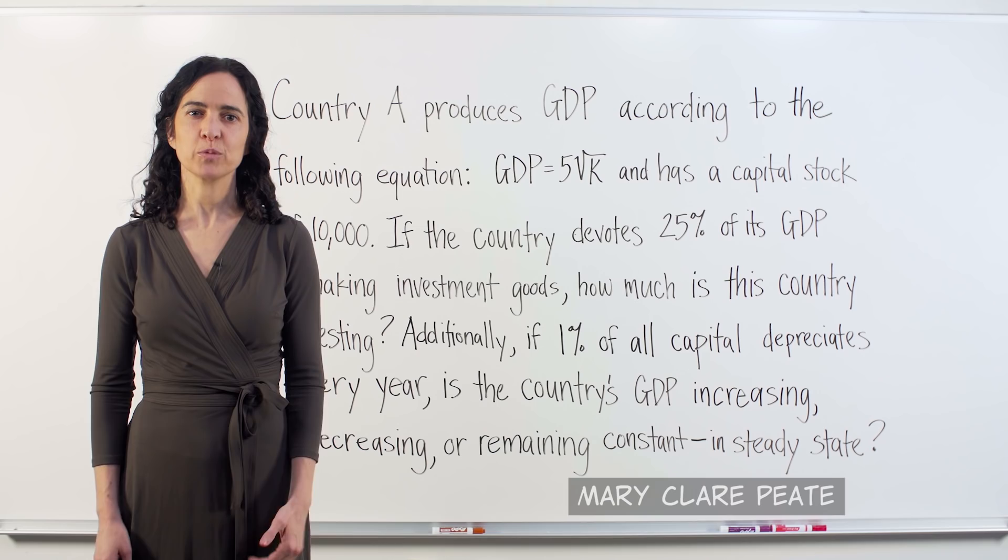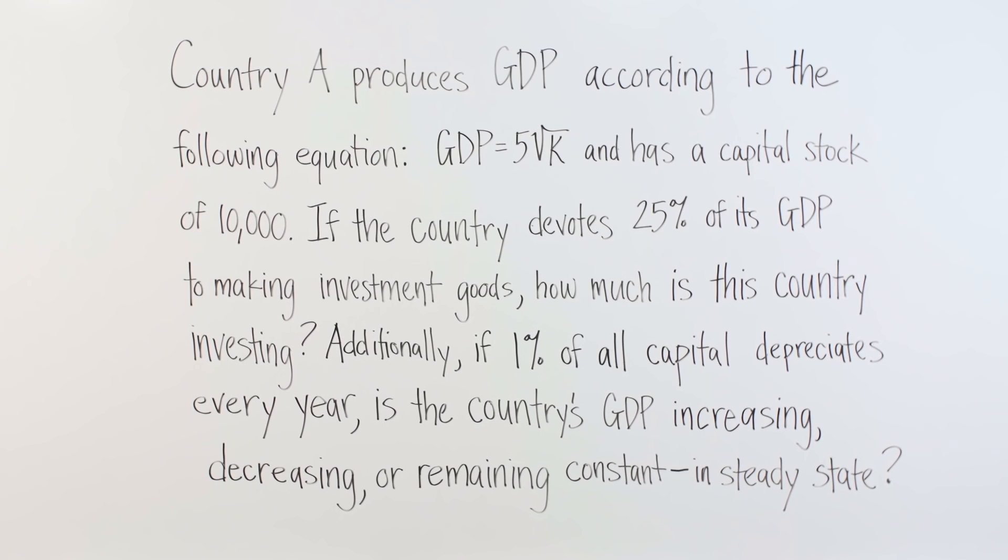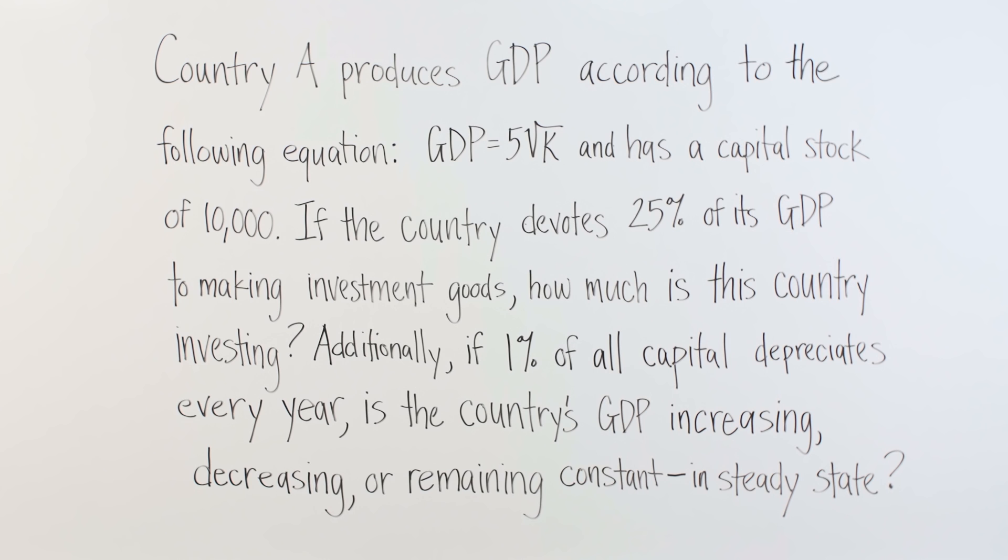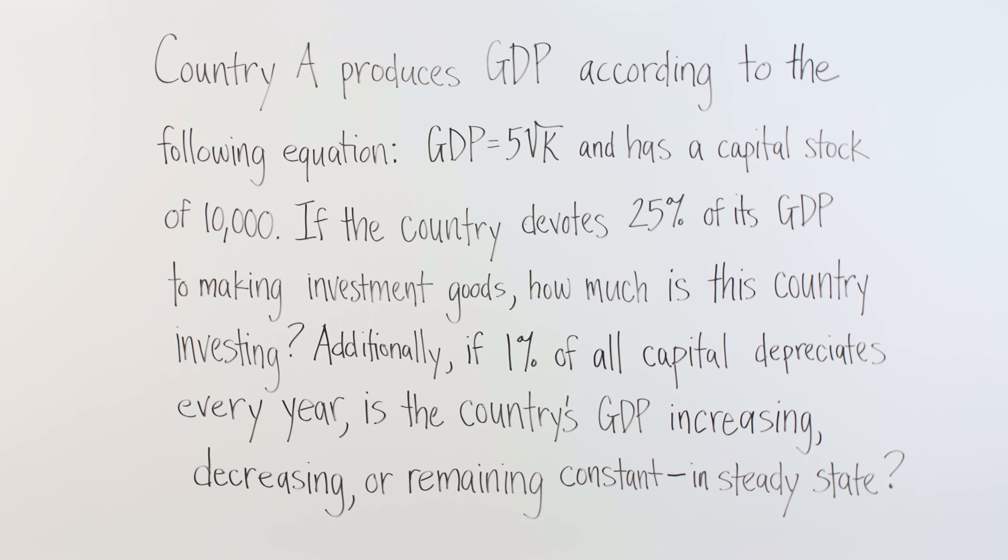Today we're going to solve the following problem from our video on the Solow model's steady state. Country A produces GDP according to the following equation: GDP equals 5 times the square root of K and has a capital stock of 10,000. If the country devotes 25% of its GDP to making investment goods, how much is this country investing?